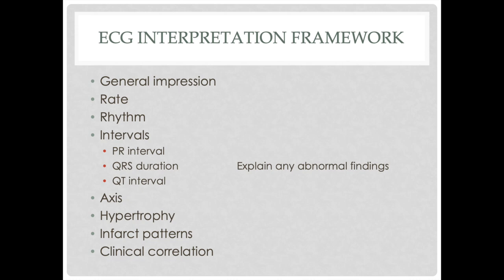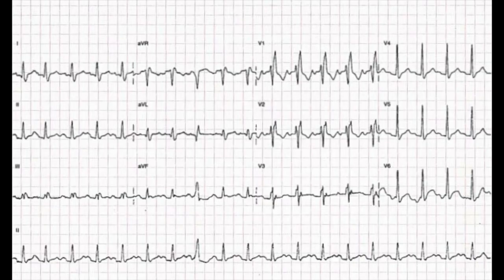Next is intervals. There are only three intervals to worry about: the PR interval, the QRS duration, and the QT interval. If there's something abnormal, I need to explain it. For example, a long PR interval is likely a first-degree AV block. A long QRS duration greater than 0.12 seconds — three small boxes — I need to explain: is that a ventricular complex, a bundle branch block, aberrant conduction? Whatever's going on, explain abnormal findings here.